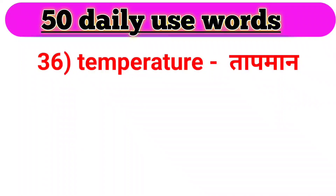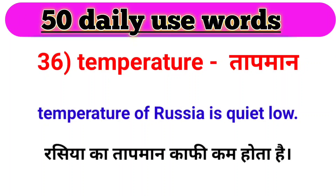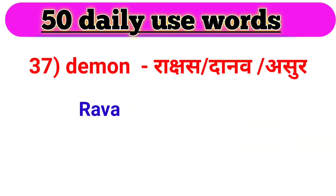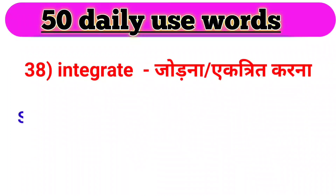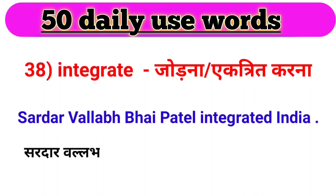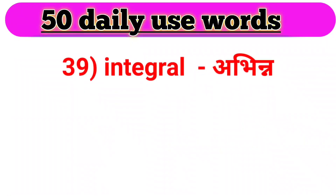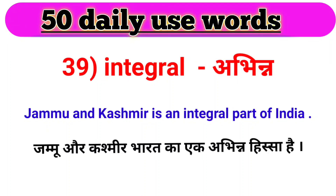Agla word hai — temperature. Temperature ka matlab hota hai taapman. For example: Temperature of Russia is quite low. Russia ka taapman kaafi kam hota hai. Agla word hai — demon. Demon ka matlab hota hai rakshas, daanav ya asur. For example: Ravan was a demon. Ravan ek rakshas tha. Agla word hai — integrate. Integrate ka matlab hota hai jodna ya ekatrit karna. For example: Sardar Vallabhbhai Patel integrated India. Sardar Vallabhbhai Patel ne Bharat ko ekatrit kiya. Next word, we have integral. Integral ka matlab hota hai abhinya. For example: Jammu and Kashmir is an integral part of India. Jammu and Kashmir Bharat ka ek abhinya hissa hai.